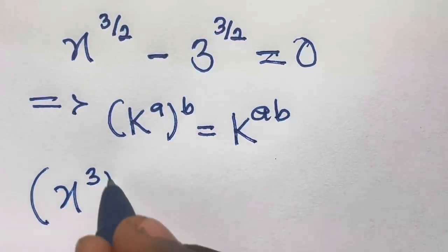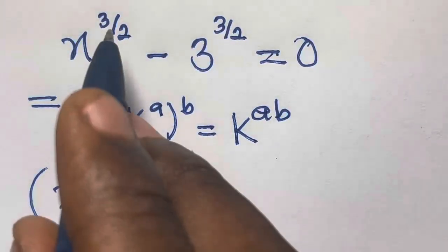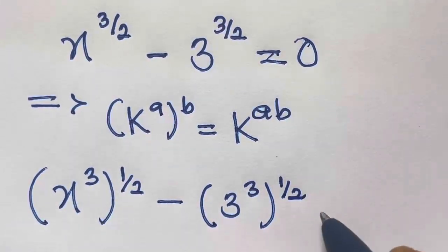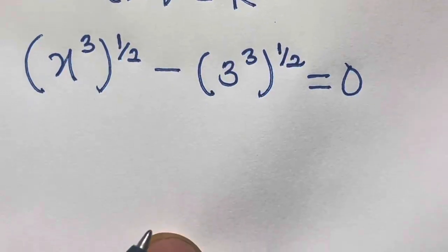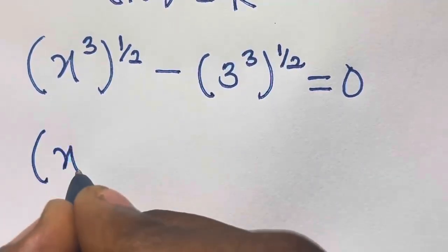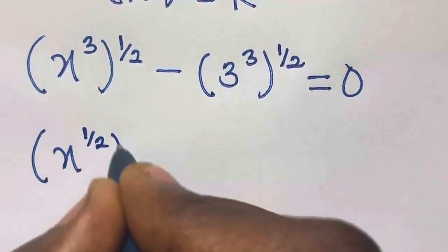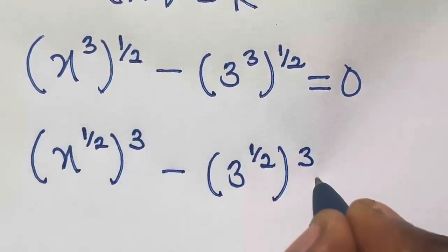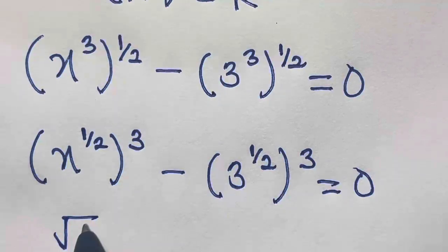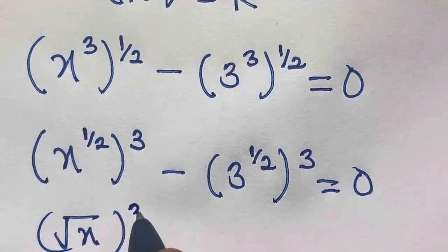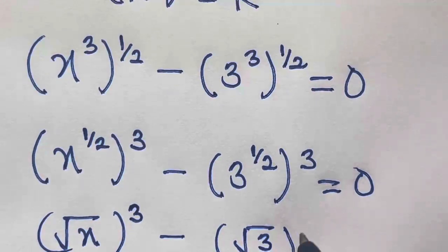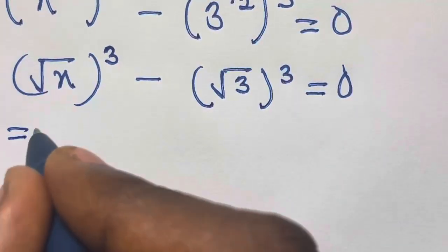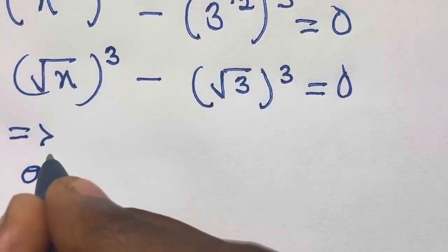So this implies we can rewrite x^(3/2) as x raised to the power 3, raised to the power 1/2. If you multiply those exponents you get 3/2 back. Similarly, 3^(3/2) becomes 3 raised to the power 3, raised to the power 1/2. So we now have (x^3)^(1/2) minus (3^3)^(1/2) equals 0, which we can write as the square root of x^3 minus the square root of 3^3 equals 0.